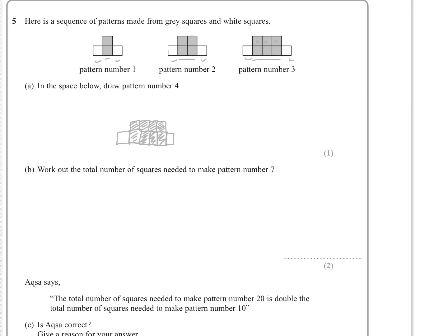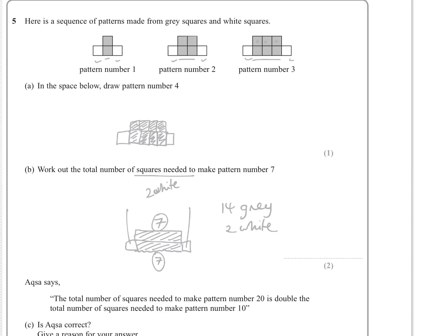It then says work out the total number of squares needed to make pattern number 7. Well, there'd be seven grey ones along the bottom with a white one either side, and seven more grey repeated on top. So we'd have seven and seven grey ones — that's 14 grey — plus two white ones as well. So two white, 14 grey, that's 16 squares altogether.